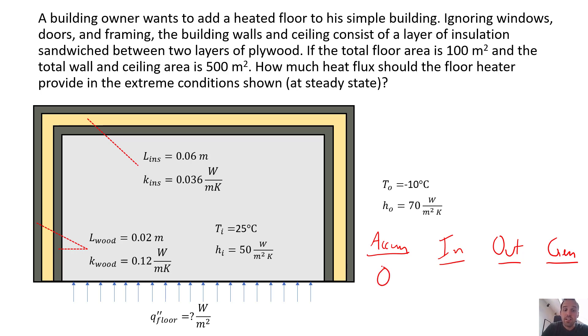We're going to design this heater system to maintain a steady state indoor temperature of 25 when the outdoor temperature is minus 10. Okay, in terms, so we could treat this heated floor as an in term. We could treat it as a generation term and that would sort of just depend on how we define our system boundaries.